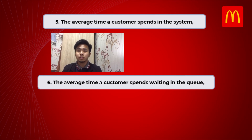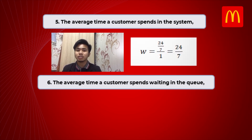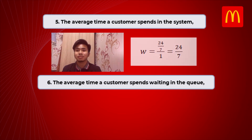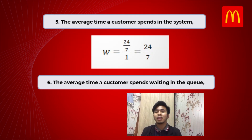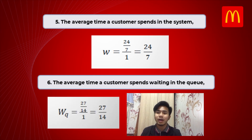For the average time a customer spends in the system (W), we use the formula W equals the average number of customers in the system divided by the arrival rate, so W equals 24 over 7 divided by 1. For the average time a customer spends waiting in the queue (Wq), the formula is Wq equals the average number of customers in the queue divided by the arrival rate, giving 27 over 14 divided by 1, which equals approximately 1.93 minutes.